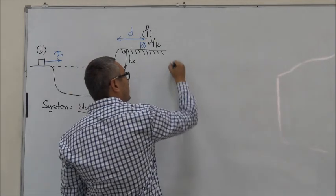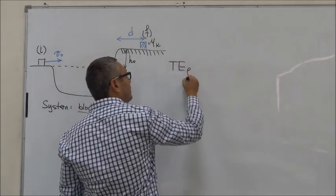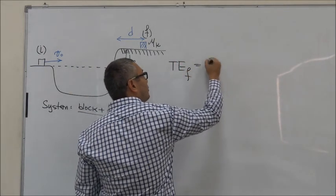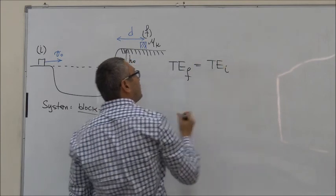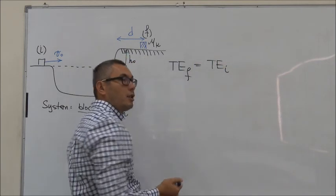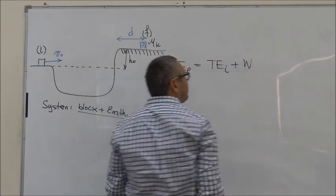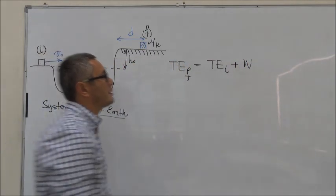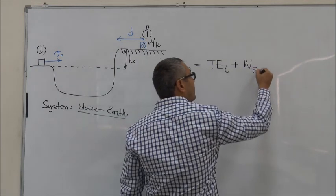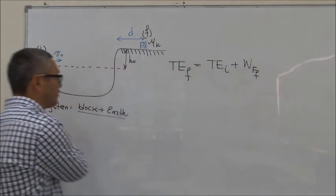Mathematically, this means that the total energy final is equal to the total energy initial plus the work done by the external force of friction. This is the work done by the force of friction, which happens to be external to the system that we have chosen.